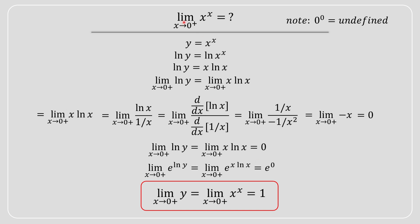So therefore the answer to this limit: the limit as x approaches 0 from the positive side of x to the power of x is equal to 1. If you enjoyed this video please drop a like and subscribe, and I'll see you all later.